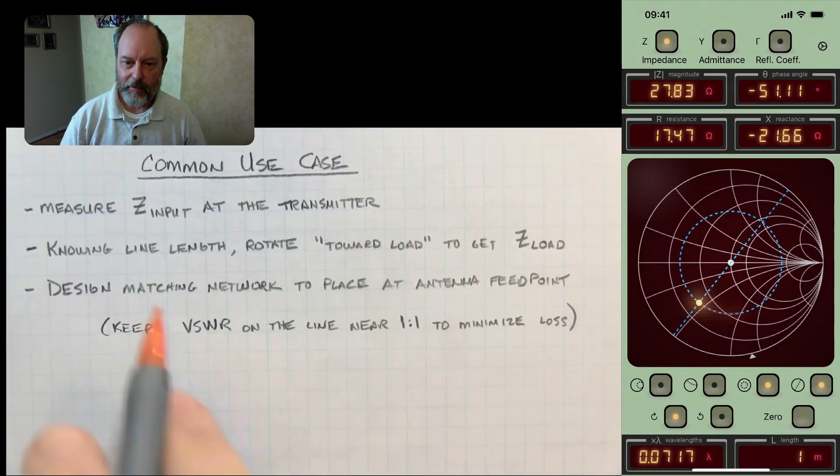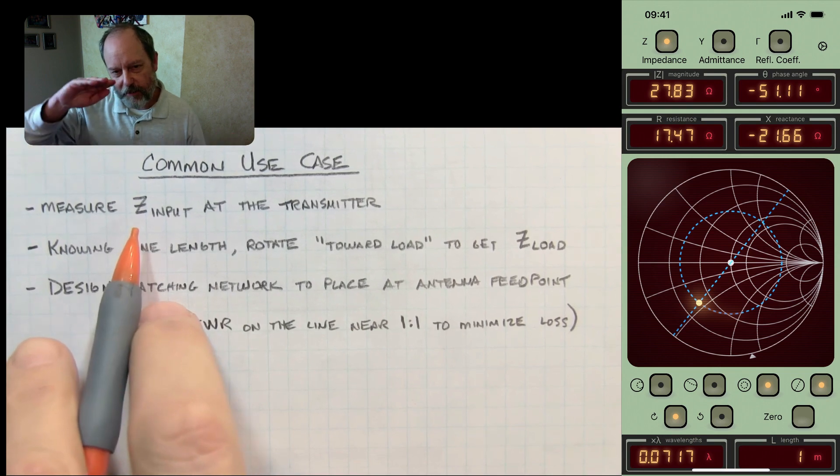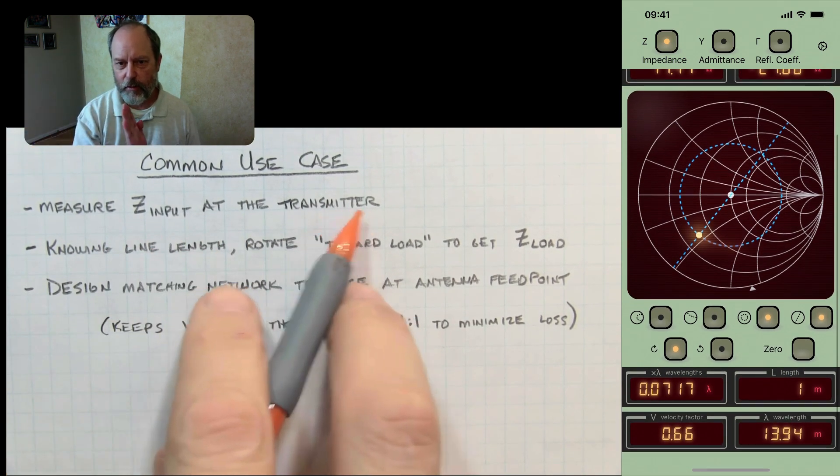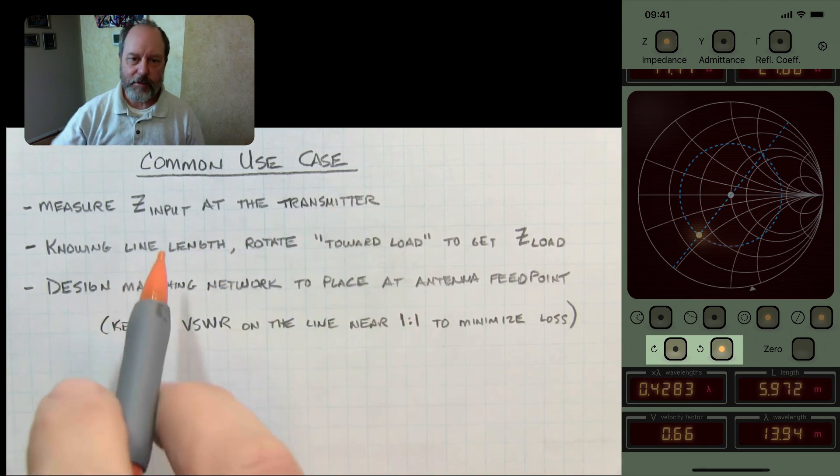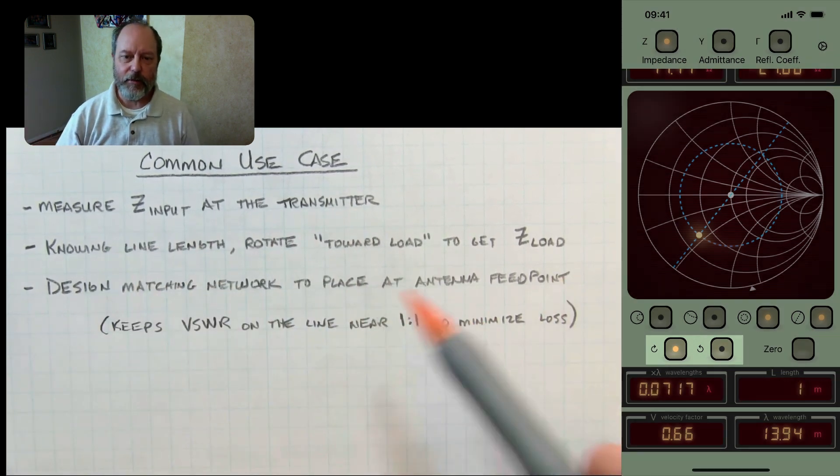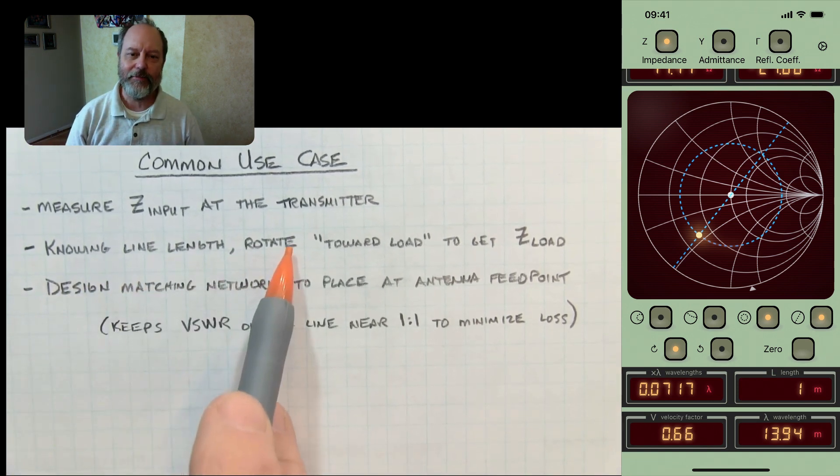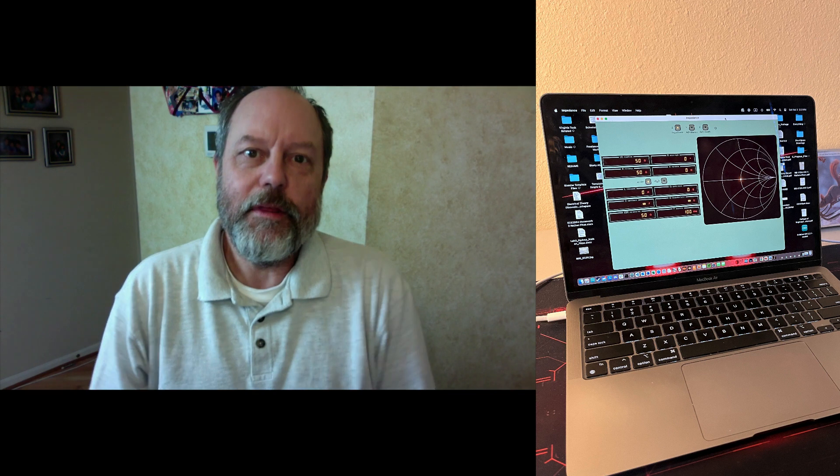And finally, one last point that Alan raises and also supported by the app is oftentimes you'll want to measure the length going towards the load or towards the generator. And that's controllable in the app where the little button at the bottom changes the direction that you're measuring length. Okay, so with that, that's the end of Alan's second video.